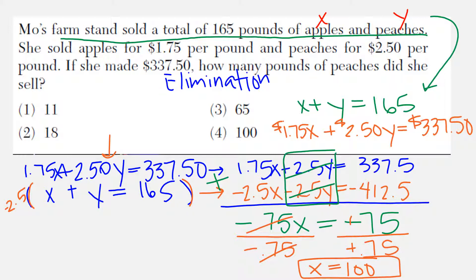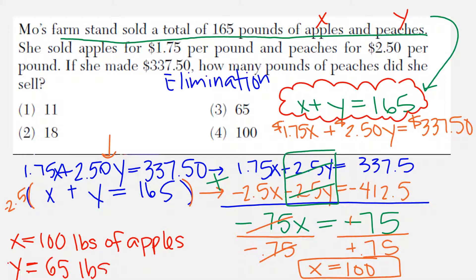Let's see what we know. In the beginning, we said X was apples, the amount of pounds of apples. So X is 100, meaning we have 100 pounds of apples. To figure out Y, plug it in. I'll use X plus Y equals 165. If I have 100, I have 65 left over. That means 65 pounds of peaches. The answer is the third choice.